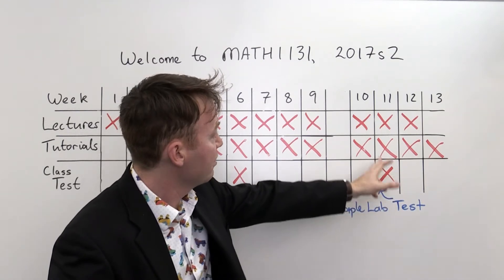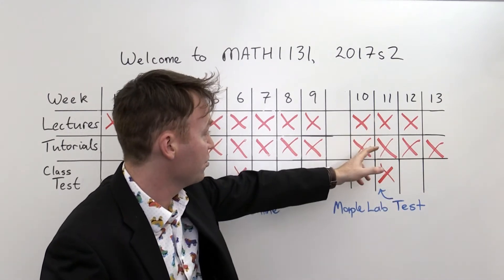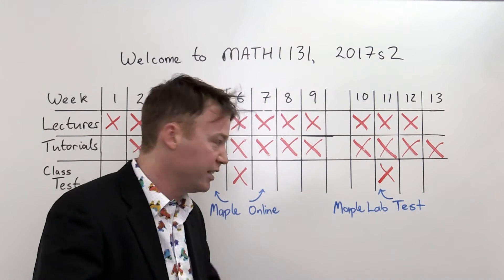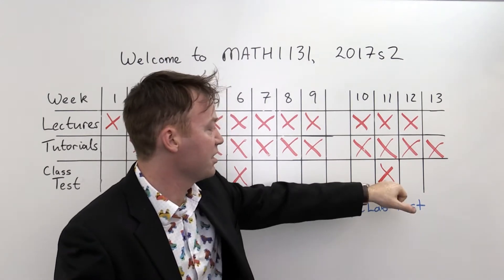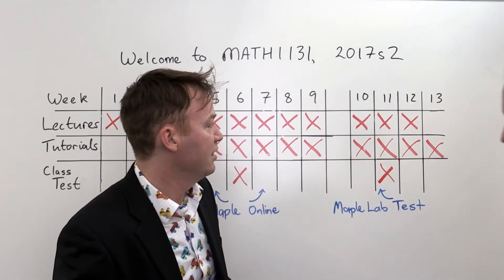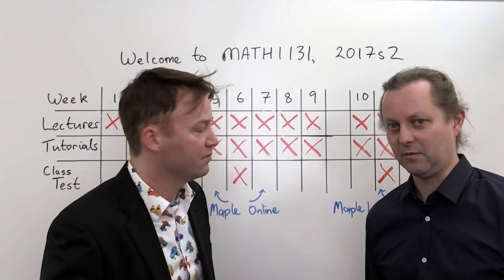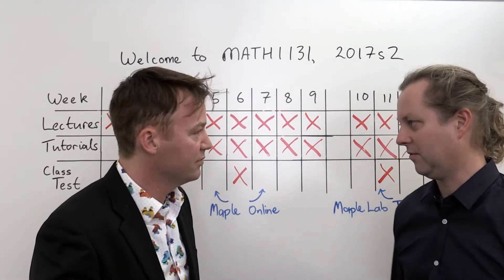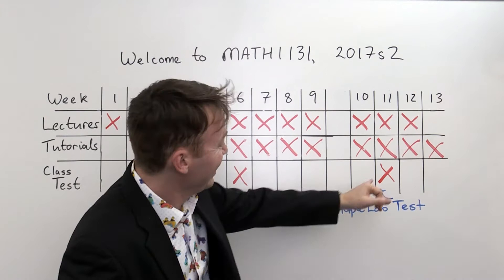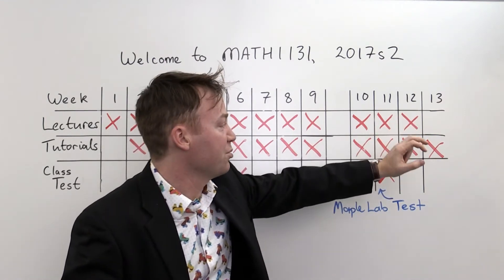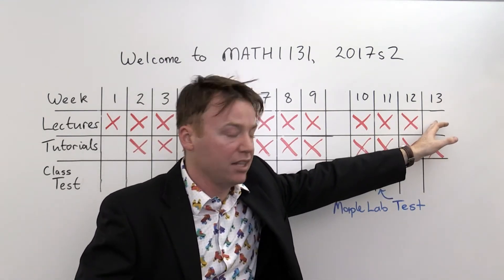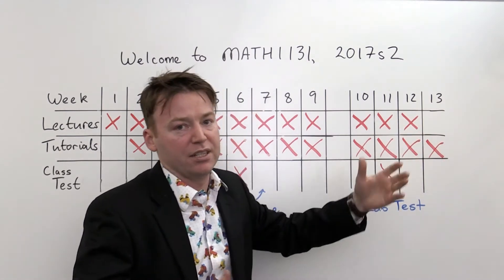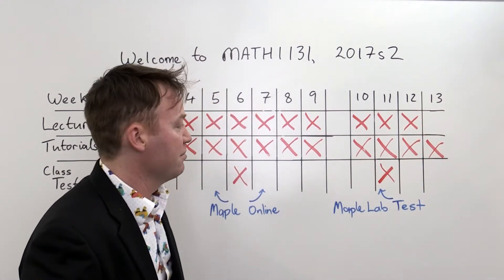After the break, you have week ten, which is just lecture and tutorial. And then in week eleven, that's a busy week, you have a Maple lab test as well as a classroom test. The lab test will be at the beginning of the week, Monday, whereas the class test will be in the second half of the week. So it's spread out a little bit. Then there's one final lecture in week twelve. There is no lecture in week thirteen. There will be a tutorial in week thirteen. And that's the timetable.